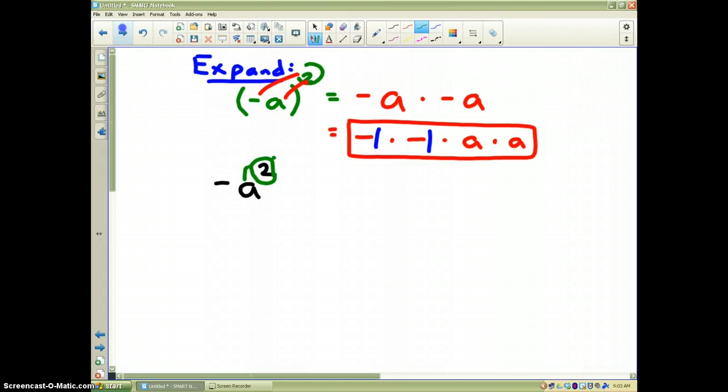If they wanted it to apply to the negative sign, they would have put it in parentheses like the first problem. So since the negative sign is, there are no parentheses, it's actually outside the parentheses, I have a negative 1 times a times a. That would be the expanded form for the second example.